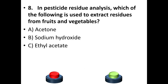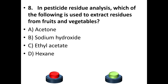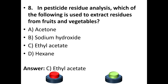Eighth question: In pesticide residue analysis, which of the following is used to extract residues from fruits and vegetables? A. Acetone. B. Sodium hydroxide. C. Ethyl acetate. D. Hexane. Your answer is option C: Ethyl acetate.